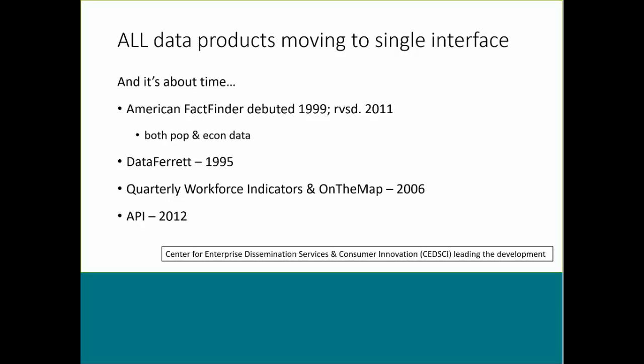All of the Census Bureau's data products are intended to move into this new interface, and it really is time for a new interface. All of the Census Bureau's tools really have at least a few years of exposure — the most recent one, the API, debuted in 2012. So it's really time for a reworking of this. The unit within the Census Bureau leading the development is SEDSCI — the Center for Enterprise Dissemination Services. There are 37 tools in all, so this is really a huge, multi-year effort.